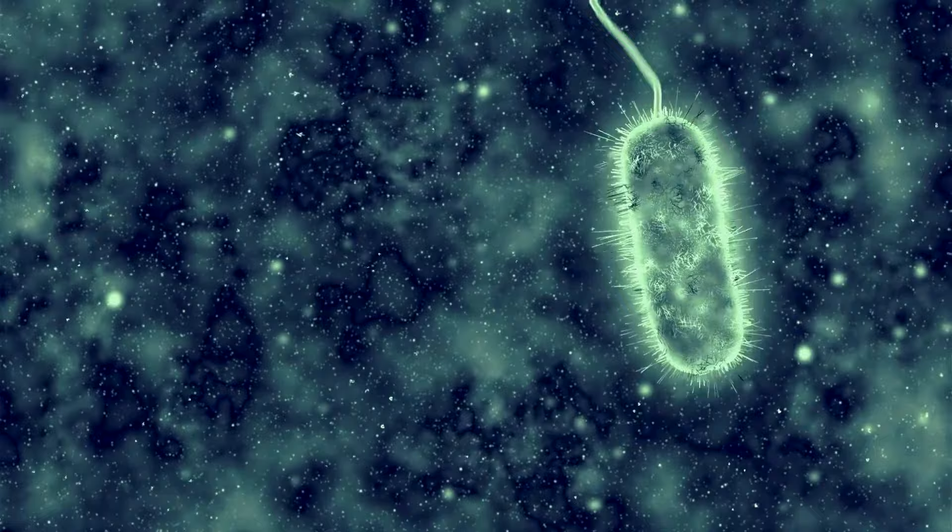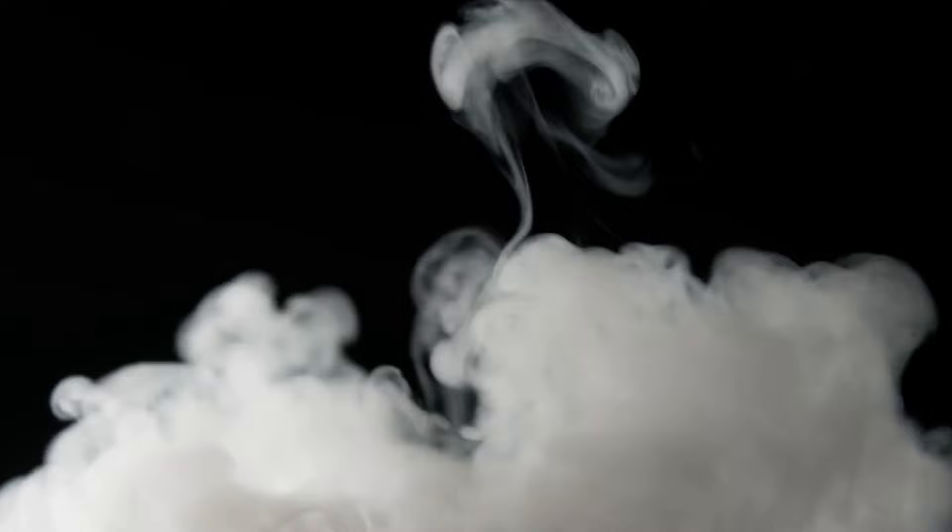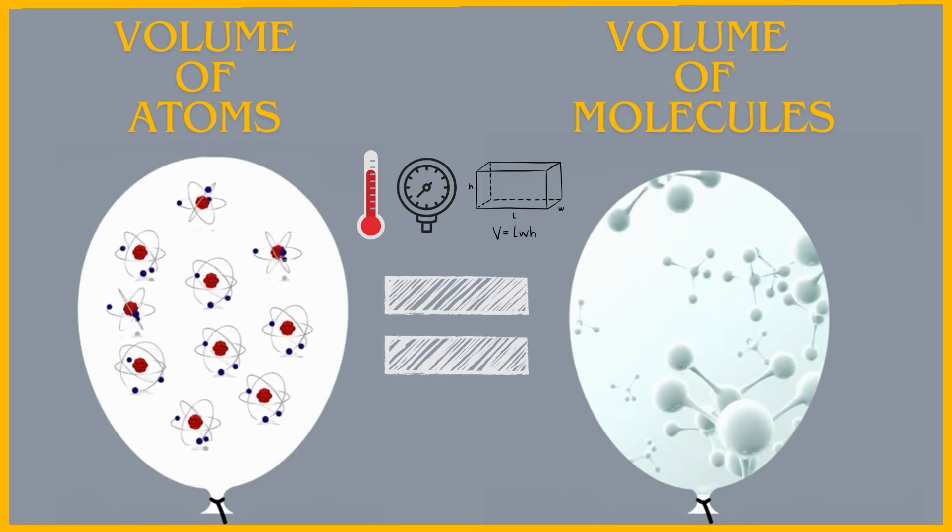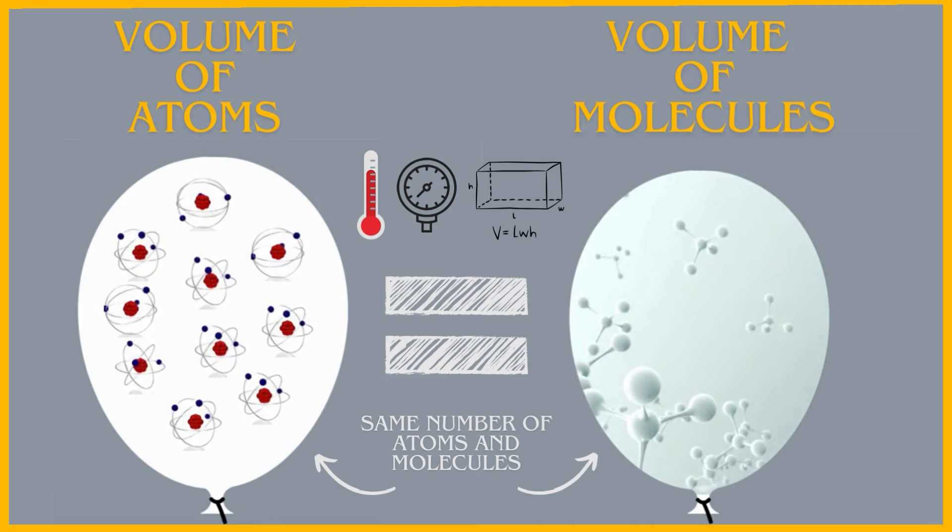As centuries passed, the 19th century ushered in tools that could magnify the unseen. Even as scientists observed the tiniest of creatures with these early microscopes, atoms eluded their gaze. However, they had tools other than sight, the power of deduction and experimentation. For instance, consider how gases behave. When measured under consistent conditions of temperature and pressure, equal volumes of different gases contain an equal number of particles, whether they're atoms or molecules.